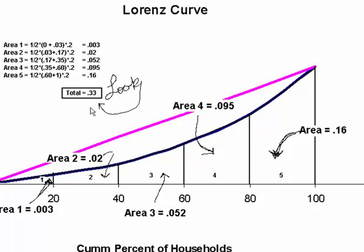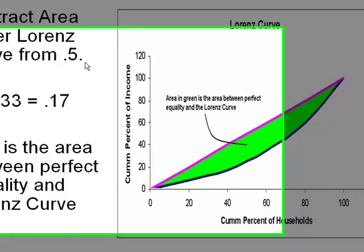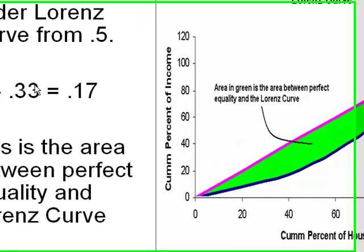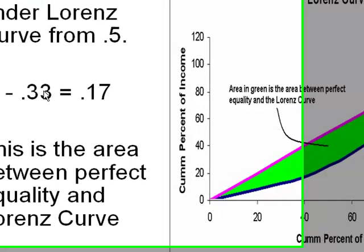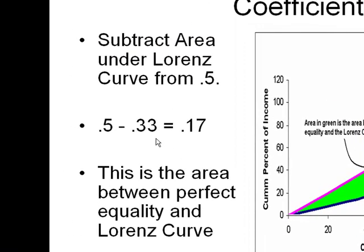Now, the area underneath the pink curve — a right triangle — would add up to 0.5. The area underneath of the Lorenz curve is 0.33. Subtracting the area underneath the Lorenz curve from the area of the right triangle gives the area shown in green.